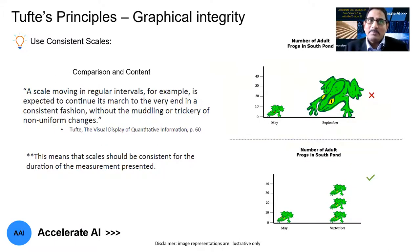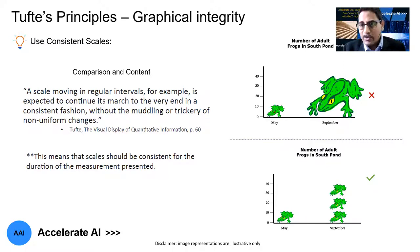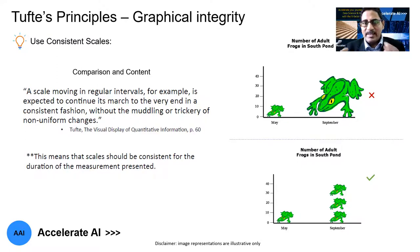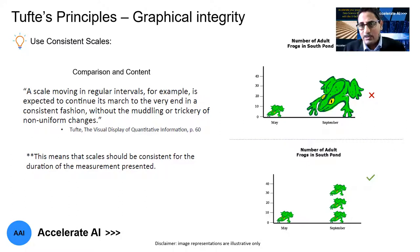Another important aspect of graphical integrity is about using consistent scales. If you take the example of the number of adult frogs from May through September — on the top you have a size representation that is not on a consistent scale. But on the bottom, that's the ideal way. If it is 3x, then you represent it with a consistent scale so that it is more appropriate to the end user who is viewing this. Comparison and context have to be looked into, so use consistent scales when showing these types of charts.